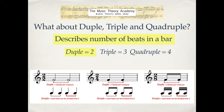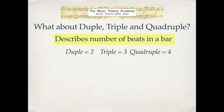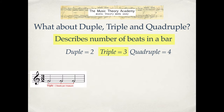Each of those examples can also be described as simple because the beats can be divided into two. So these examples would be simple duple meter — simple because each beat can be divided into two, duple because there are two beats in every bar.